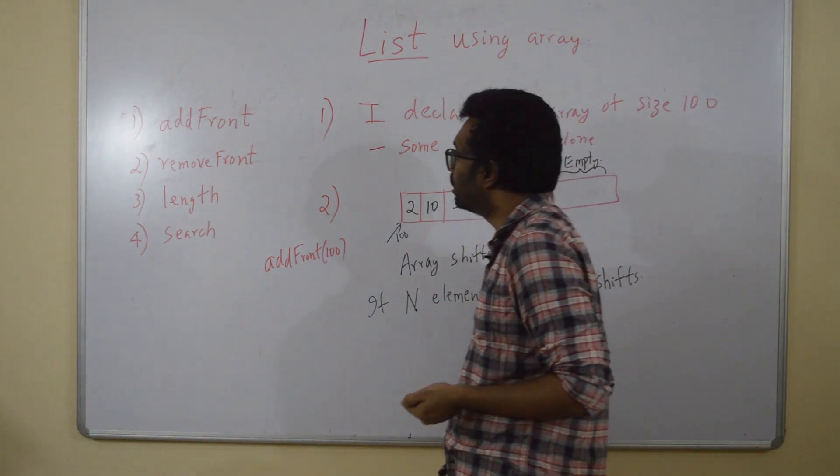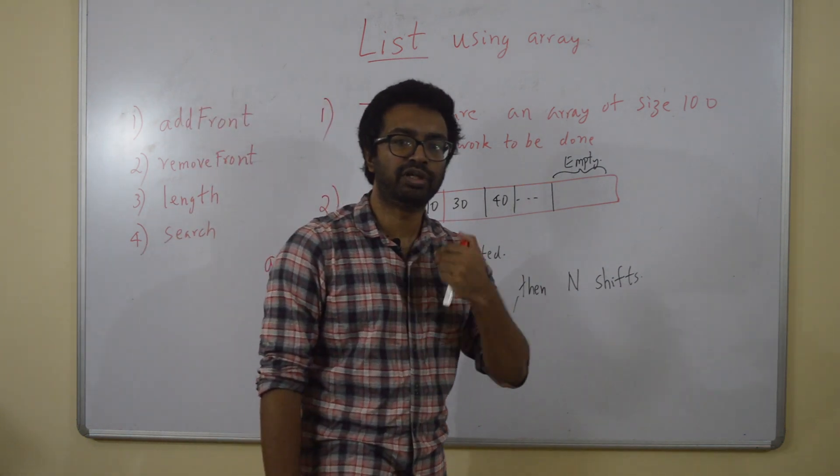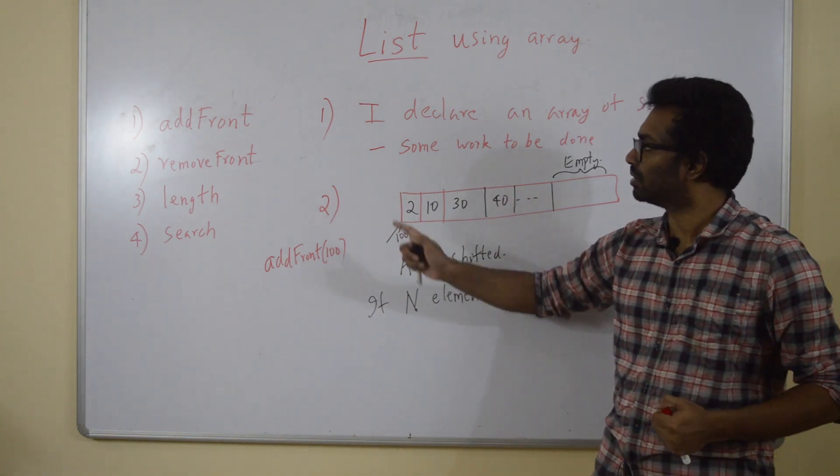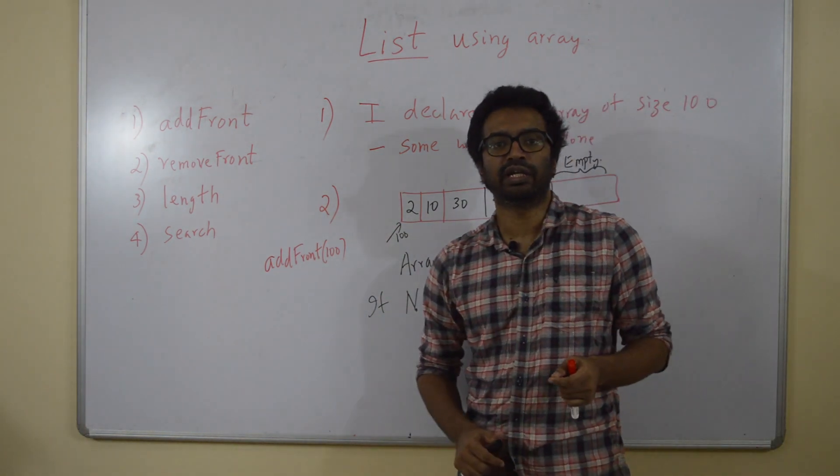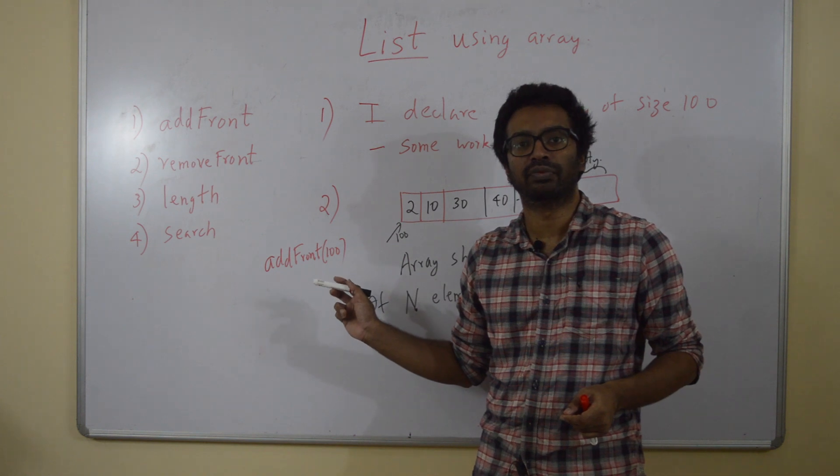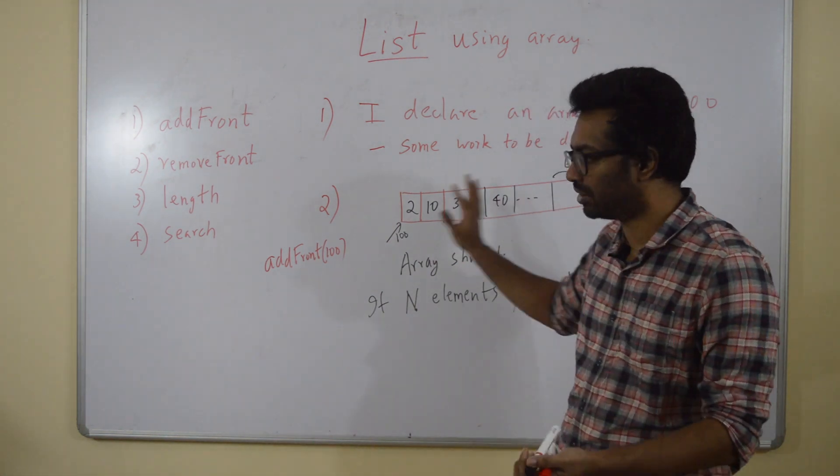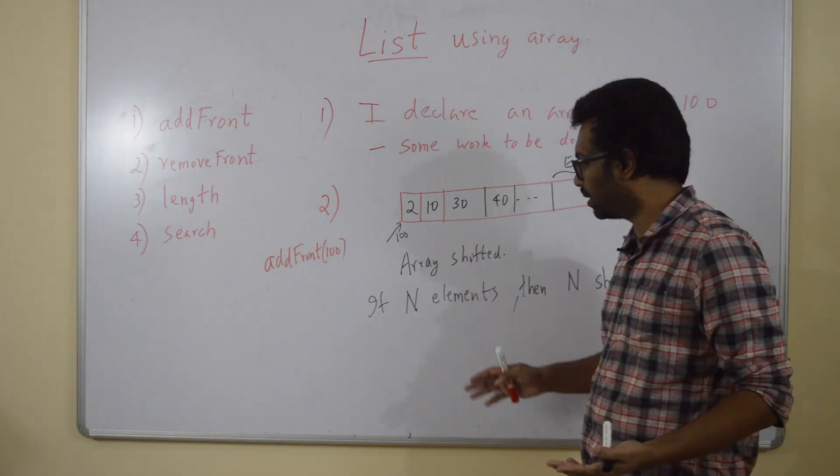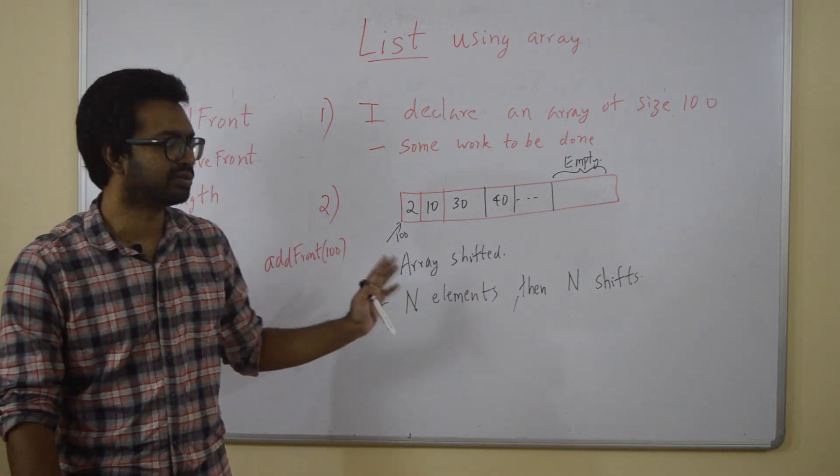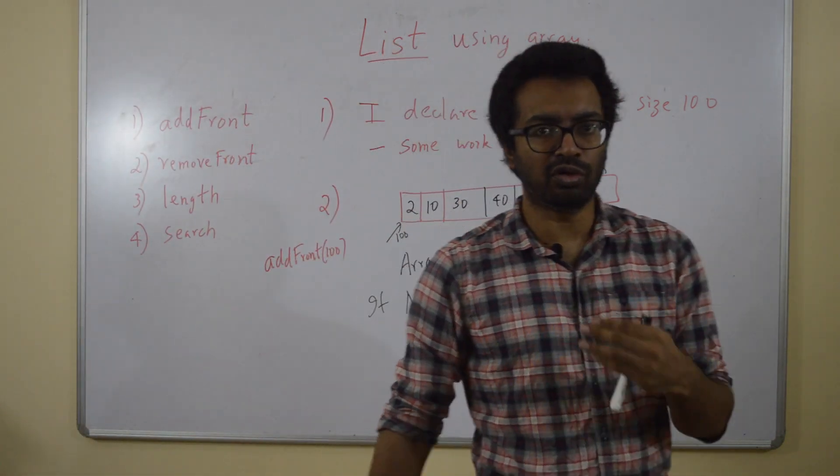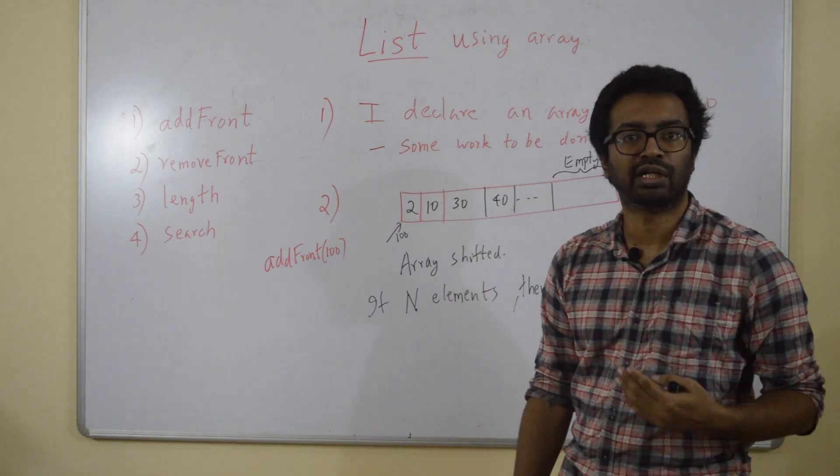We want a system, we want a list which works better than this, which can be implemented better in both these conditions. Do you also notice that if you have to remove an array element, it is the same issue. Again, if you have to remove this number 2, you have to again shift. So removal is also, if there are n elements in the array, when you have to remove, you will have to shift n or n minus 1 elements. So removal is also going to take a lot of time. Both add and remove are going to take some time if you are using an array data structure.